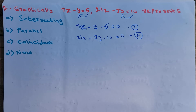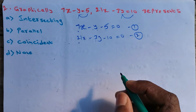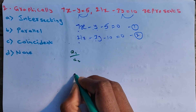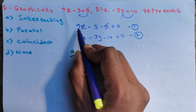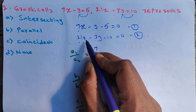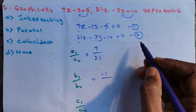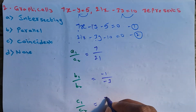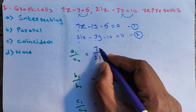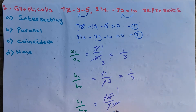We need to compare a1/a2, b1/b2, and c1/c2. a1/a2 = 7/21 = 1/3. b1/b2 = −1/−3 = 1/3. c1/c2 = −5/−10 = 1/2. So a1/a2 = b1/b2 ≠ c1/c2.